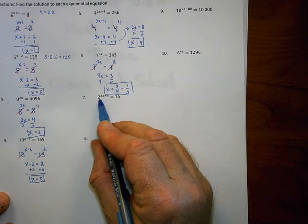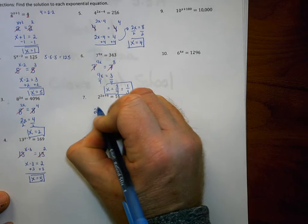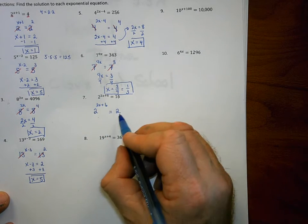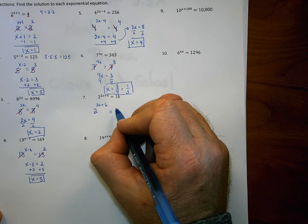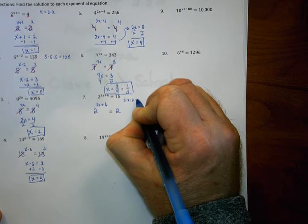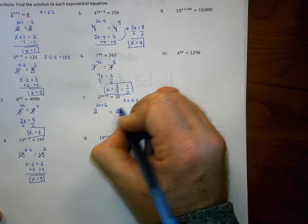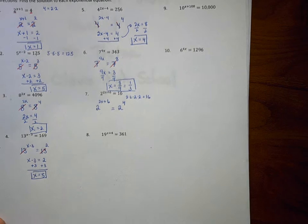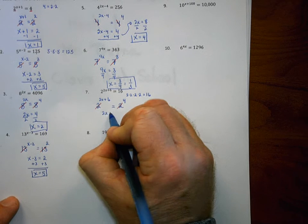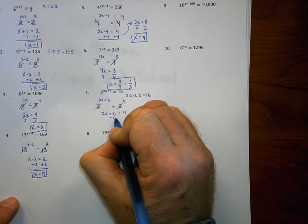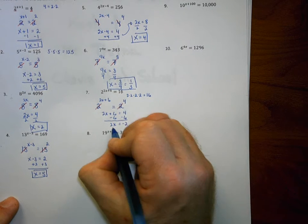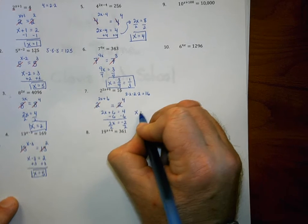Number 7: 2 is the smaller base side, so I keep 2 to the power of 2x plus 6, and change 16 into a power of 2. 2 times itself how many times equals 16? 2 times 2 is 4, times 2 is 8, times 2 is 16. So 2 to the 4th power equals 16. The bases cancel, giving the equation 2x plus 6 equals 4. Subtracting 6 from both sides gives 2x equals negative 2. Dividing by 2, x equals negative 1.